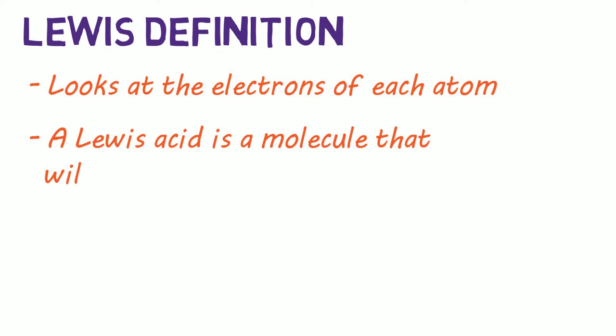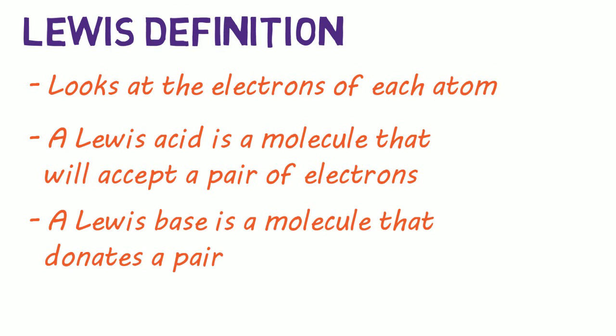The Lewis definition of acids and bases dives into organic chemistry, looking at the electrons of each atom. So a Lewis acid is a molecule that will accept a pair of electrons, while a Lewis base is a molecule that donates a pair of electrons.